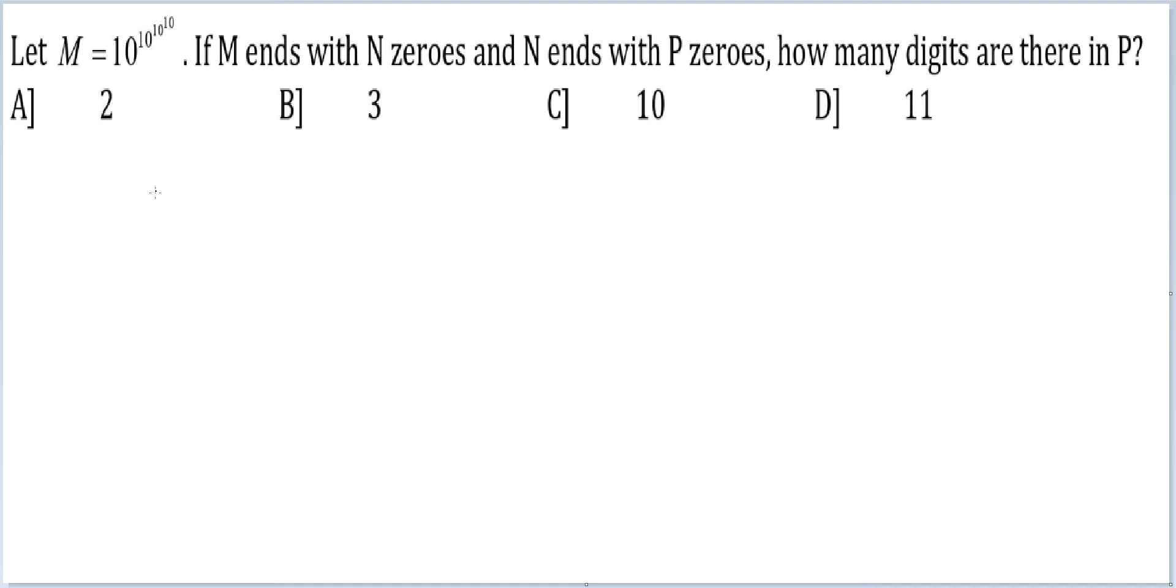Okay, let's see. Now for any random number k, if k is equal to 10 raised to the power n, k will end with n zeros. This you need to know.